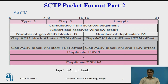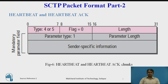Gap ACK Block Start Offset: For each gap block, this 16-bit field gives the starting TSN relative to the cumulative TSN. Gap ACK Block End Offset: For each gap block, this 16-bit field defines the ending TSN relative to the cumulative TSN. Duplicate TSN: For each duplicate chunk, this 32-bit field gives the TSN of the duplicate chunk.